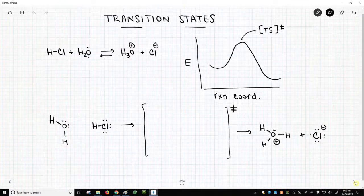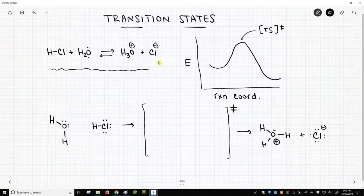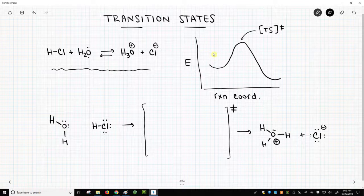So on this slide, we have a very familiar reaction, the reaction of HCl, a strong acid, with water to form hydronium, H3O+, and chloride. And I've drawn a sketch of the reaction coordinate for this particular reaction. You can see there's one peak on this reaction coordinate.